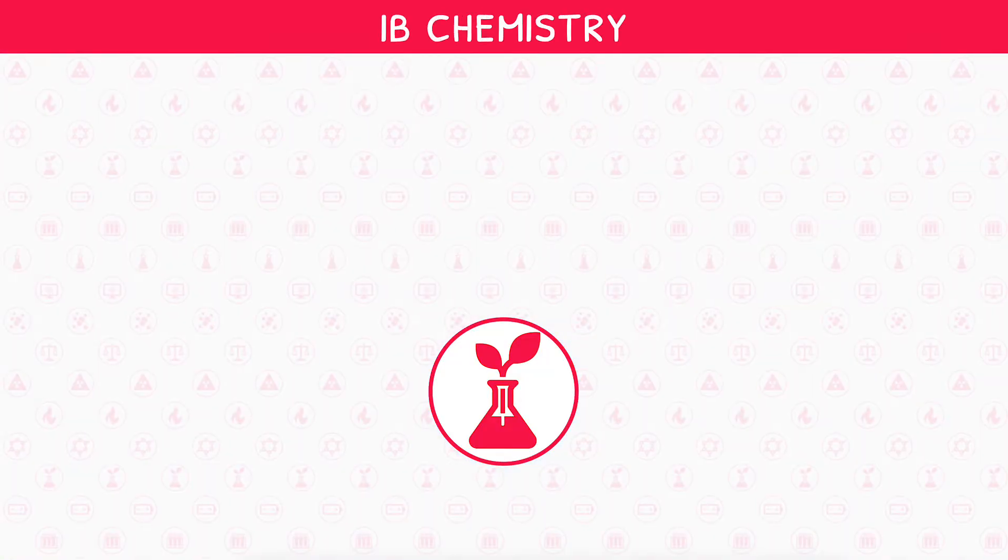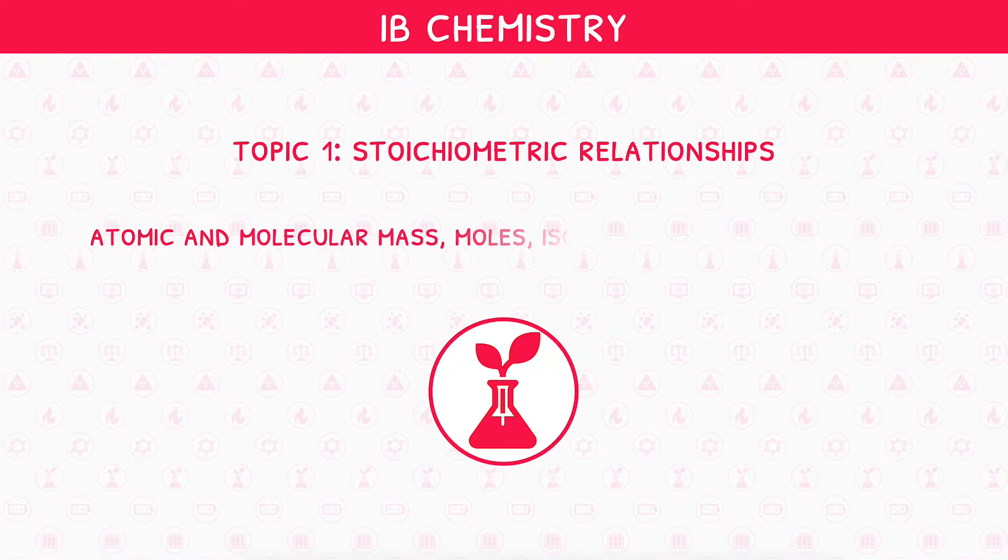Welcome back to our IB Chemistry video series. This is the second video in IB Chemistry Topic 1, Stoichiometric Relationships, where we will be looking at the concept of atomic and molecular mass, moles, isotopes, and how to determine empirical formula.